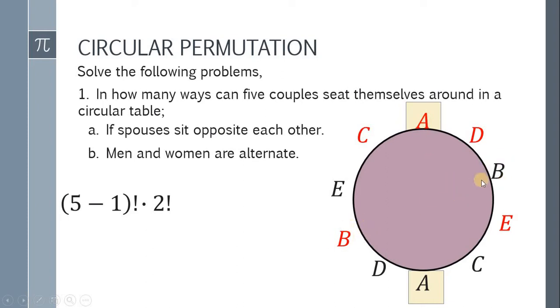Ang tanong, meron tayong limang couples. Letter A, meron tayong two factorial. Si B, pag nagpalit yan, another two factorial. Si C, pag nagpalit, another two factorial. Si D, another two factorial. At si E, another two factorial. So we have two factorial times two factorial para kay B, para kay C, para kay D, at para kay couple E. Therefore, the total number of ways kung saan sila ay magkatapat sa upuan is equal to 768 different ways.